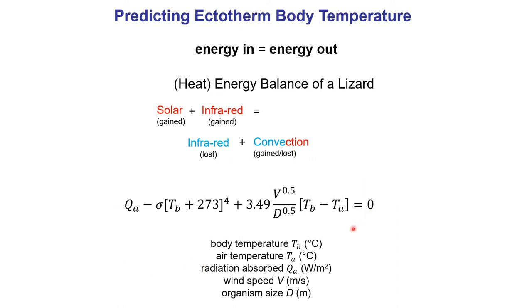Our final equation gives body temperature in degrees C, air temperature in degrees C, radiation in watts per metre squared, wind speed in metres per second, and diameter in metres. All units must be dimensionally consistent and result in watts, since we're talking about the flux of energy going in and out of the organism. What we ideally want is body temperature as a function of air temperature, radiation, body size, wind speed, and other organism traits.